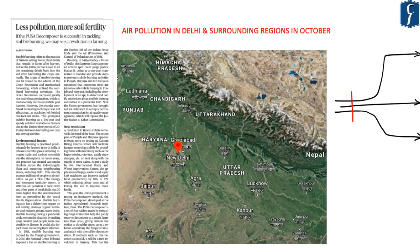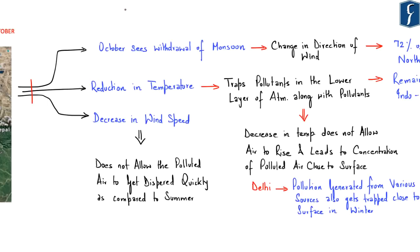The next news appears on page number 7 and is also with respect to air pollution and its causes especially during winter in the National Capital Region of Delhi and surrounding areas. This news says 'Less pollution, more soil fertility.' Let us understand why air pollution in Delhi increases especially during the onset of winter in October and November, identifying three important factors, beginning with the geographical factor.